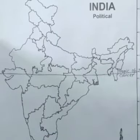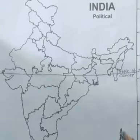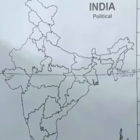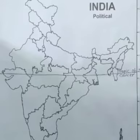Here you can see the Andaman and Nicobar Islands. An island is a land which is surrounded on all sides by water.